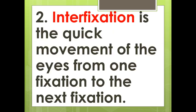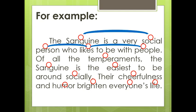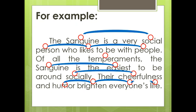Second, interfixation is the quick movement of the eyes from one fixation to the next fixation. For example: 'The sanguine is a very social person.' As you can observe, interfixation is the eye movement from one fixation or one eye's rest to the next fixation or another rest of your eye. So that is what we call interfixation.